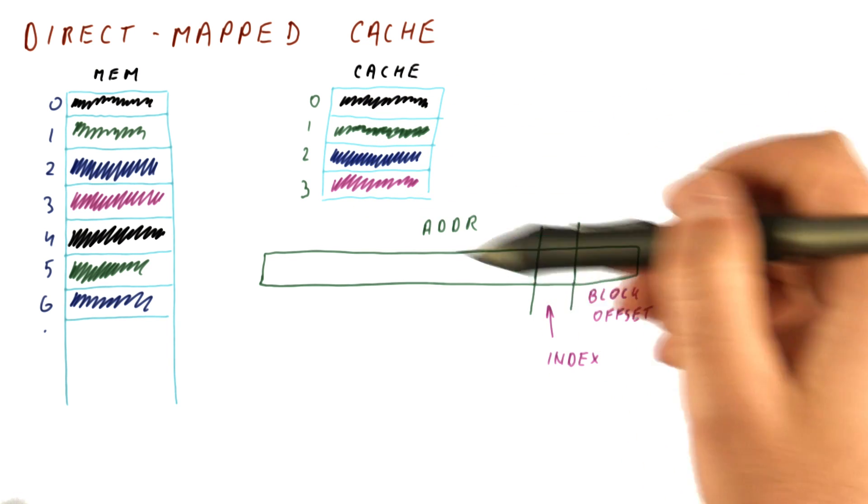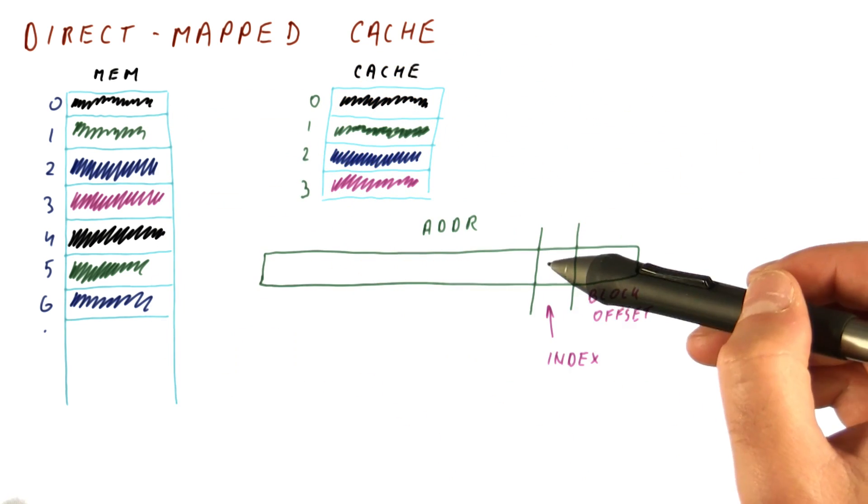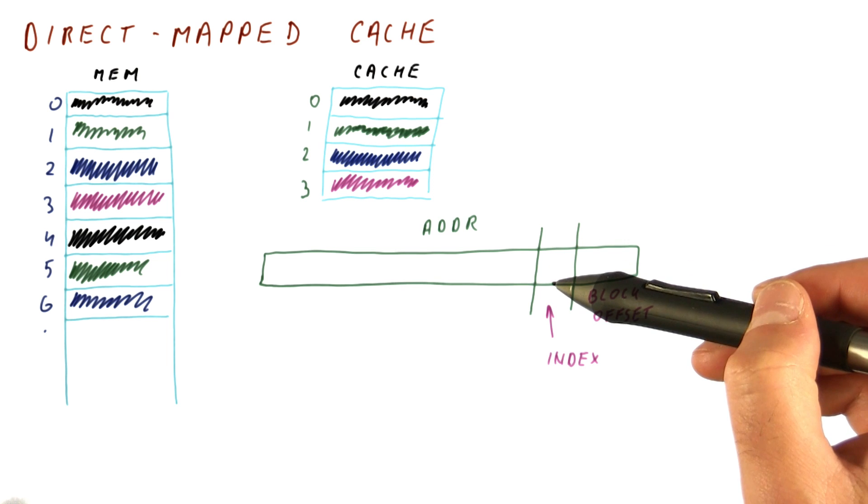And that is why in the block number, it was 0, 1, 2, 3, 0, 1, 2, 3, etc. It was determined by the lowermost bits of the block number.